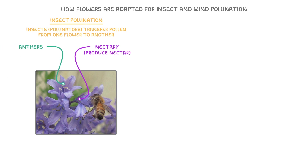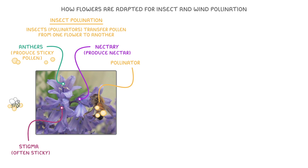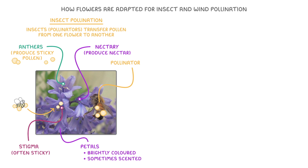The anthers in insect-pollinated plants are usually inside the flower, and they often produce sticky pollen that attaches to pollinators' bodies as they move past into the flower. The stigma is also usually inside the flower and is often sticky too, so that when pollinators visit from another flower to obtain more nectar, the pollen rubs off onto the stigma, pollinating the plant. Finally, the petals of insect-pollinated flowers are often brightly coloured to stand out in green vegetation, and are sometimes scented too, advertising that the flower has nectar.